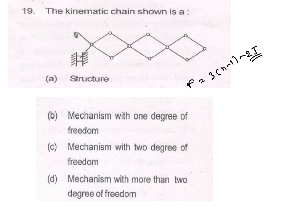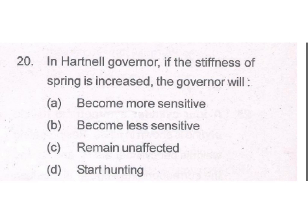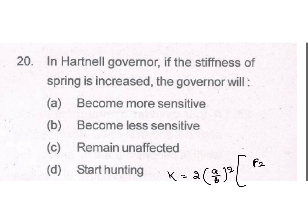In the Hartnell governor, if the stiffness of the spring is increased, the governor will become less sensitive. The stiffness formula is k equal to 2(a/b)² multiplied by (F2 minus F1) divided by (r2 minus r1). And the answer is: it becomes less sensitive.